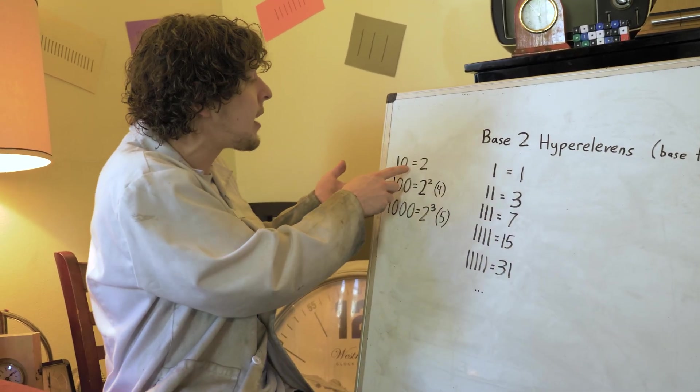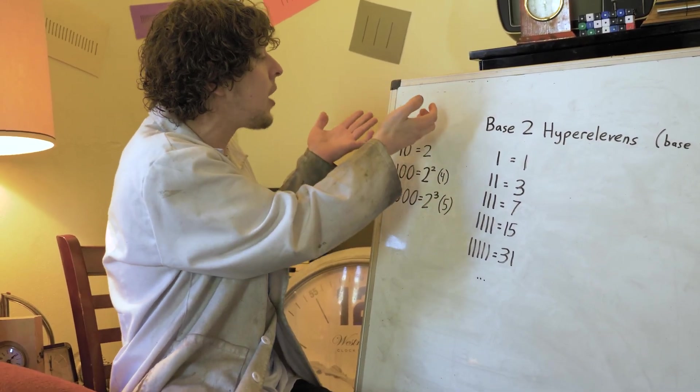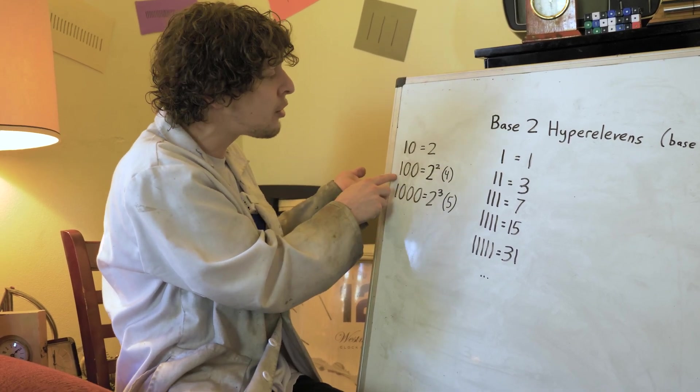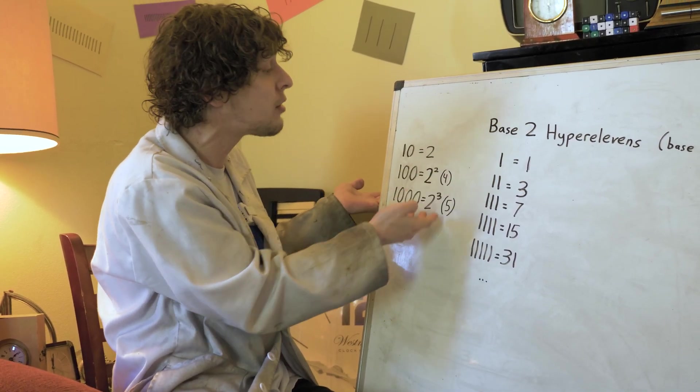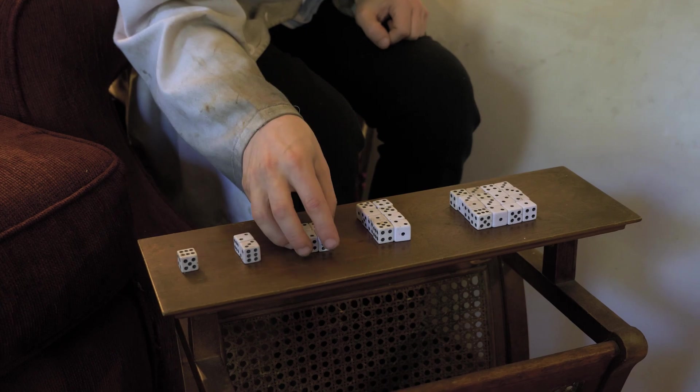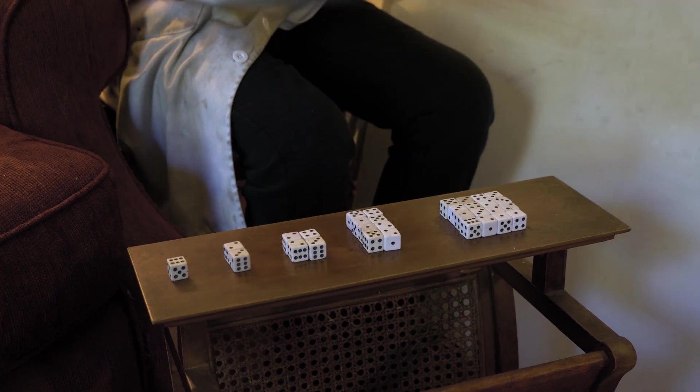Now, remember in this binary system, we have our ones place as usual, but our tens place is how many twos there are. The hundreds place is now how many two squares there are and so on. Like here's my ones place. This would be if I have a tens place, I get that if I have a hundreds place and so on.